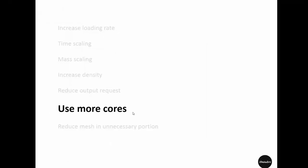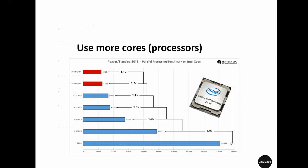The next tip is using more cores in your processor. Here is a benchmark example using an Intel Xeon processor. For a particular simulation using one core it took a certain amount of time, and when using two cores instead of one the simulation sped up by 1.9 times.